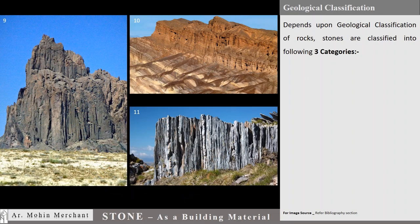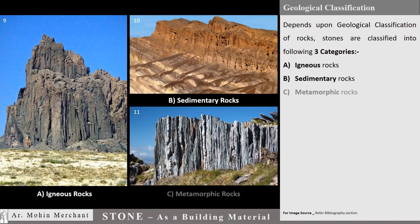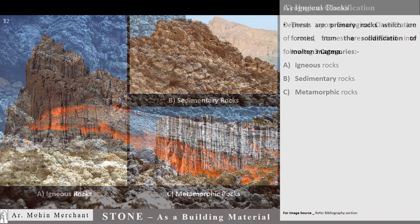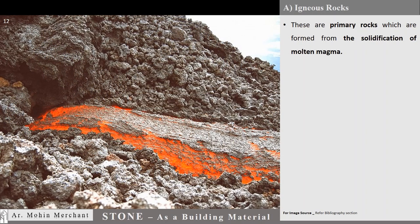Depending upon the geological classification of rocks, stones are classified into the following three categories: Igneous rocks, Sedimentary rocks, and Metamorphic rocks. Igneous rocks are primary rocks which are formed from the solidification of molten magma.